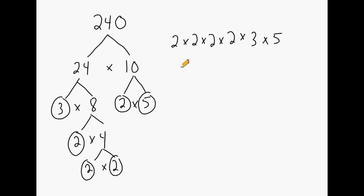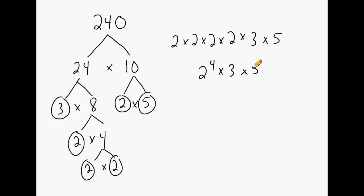Now we can express this in exponential notation. 2 times 2 times 2 times 2 may be expressed as 2 to the fourth power. Because we only have one 3 and one 5, we just write a single 3 and a single 5. So 2 to the fourth power times 3 times 5 is the prime factorization of 240.